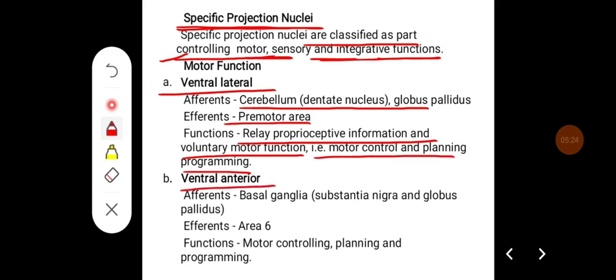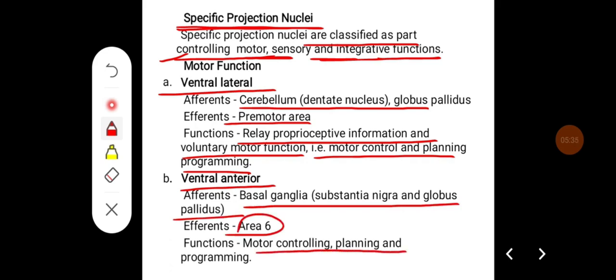For the ventral anterior nucleus, afferents come mainly from the basal ganglia — from the substantia nigra and globus pallidus — and efferents go to area 6. Its function is mainly motor control, planning, and programming.